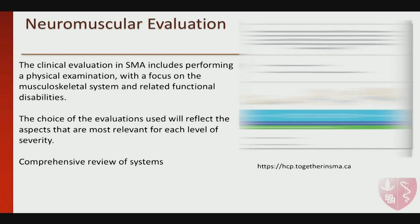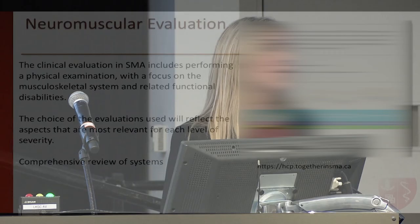For the neuromuscular evaluation, we typically see SMA patients every four to six months in our clinic. They are seen by a neurologist or physiatrist, including a physical examination focused primarily on the musculoskeletal system and related functional disabilities. The choice of evaluations reflects the aspects most relevant for each level of severity — non-ambulant, sitters, or non-sitters — and includes a comprehensive review of systems. This is a very comprehensive visit, often more than one hour, sometimes two, covering all these different systems.